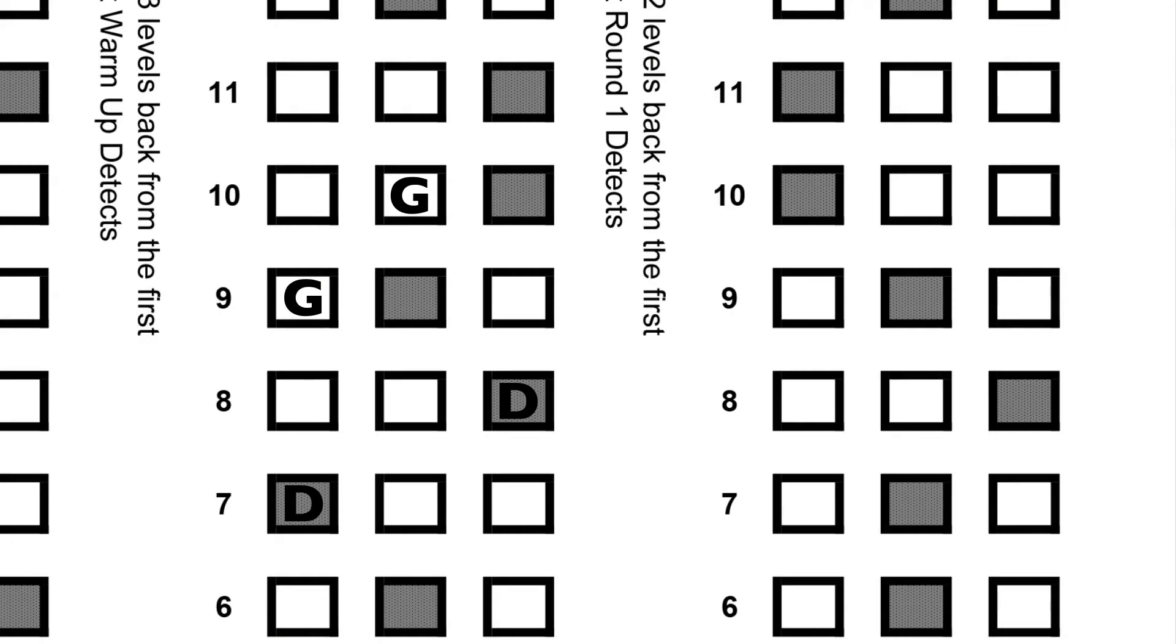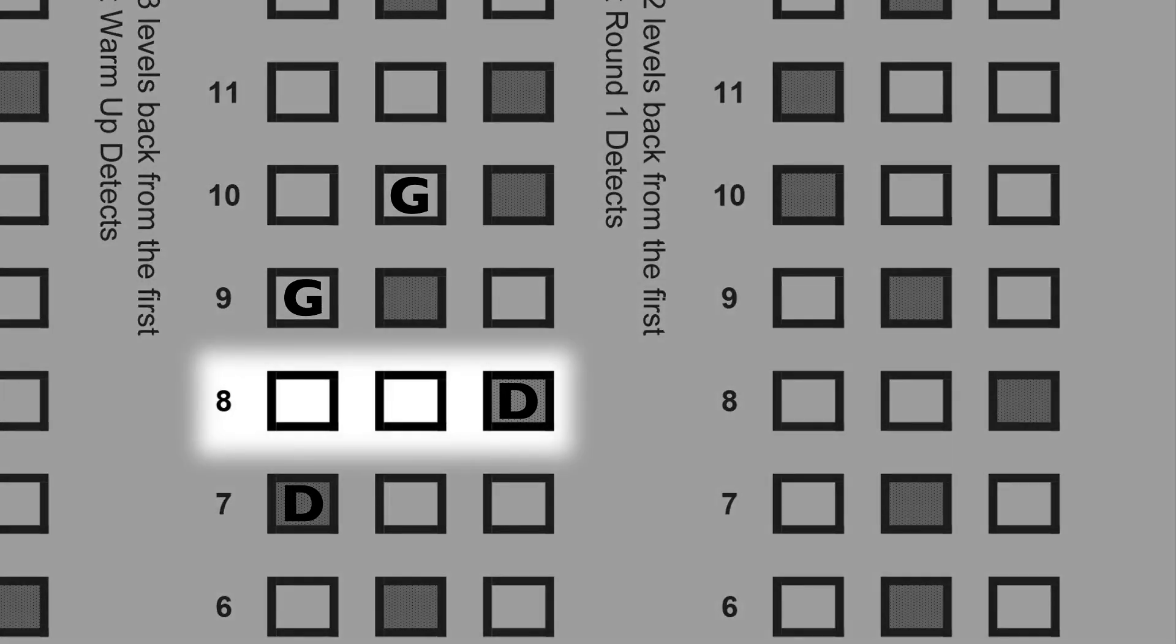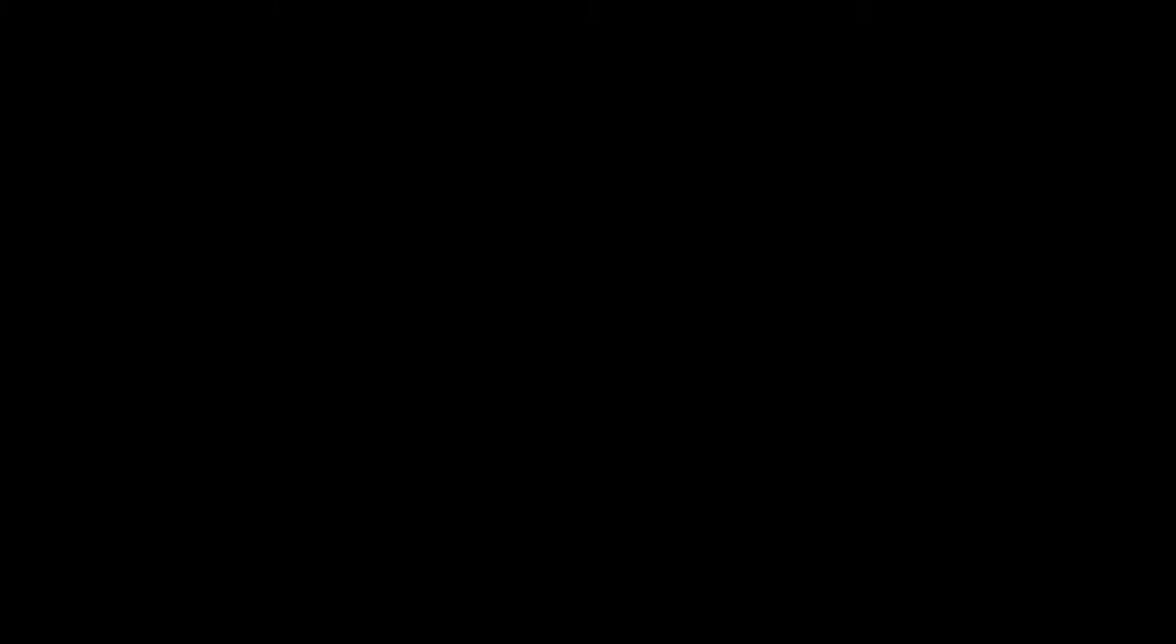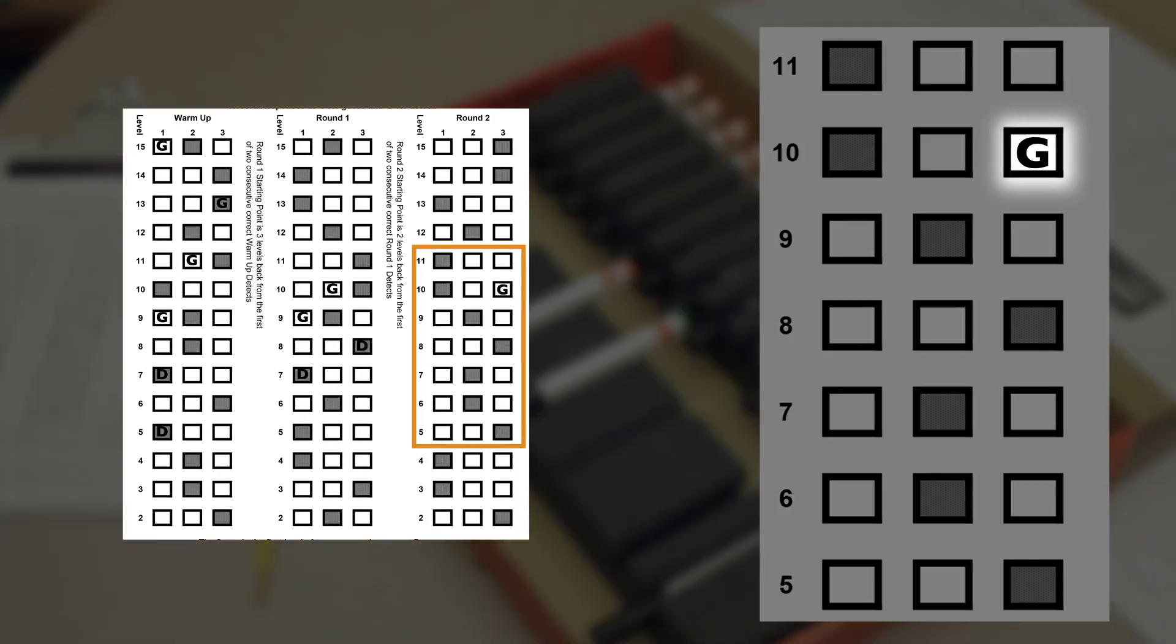A five-minute break is again taken to rest the test individual's nose. Round two starts two pen levels from the first detected pen in round one. Since the first detection was at pen number eight in round one, we'll start at pen number ten in round two. In round two, the test individual responded with guesses for number ten, number nine, and number eight pens. Then correctly detected for the number seven pen, and then confirmed with another correct detection for number six.